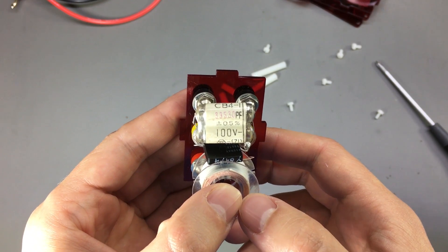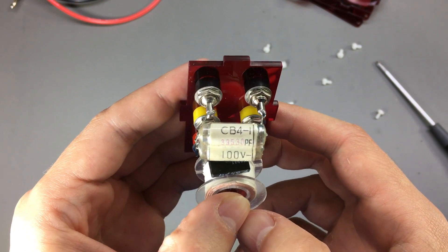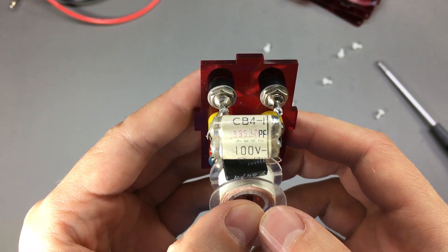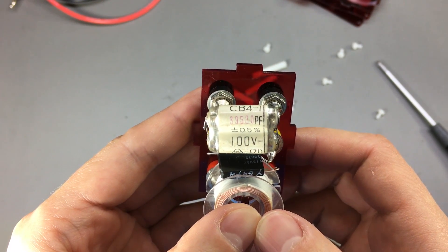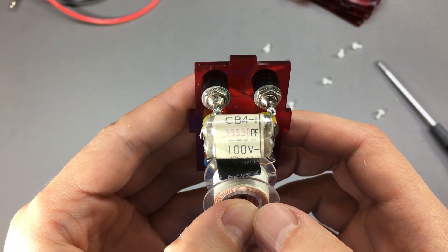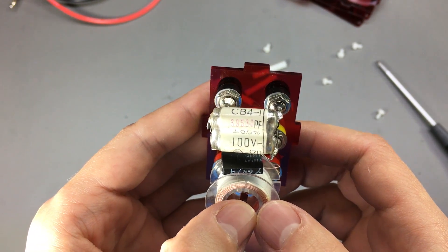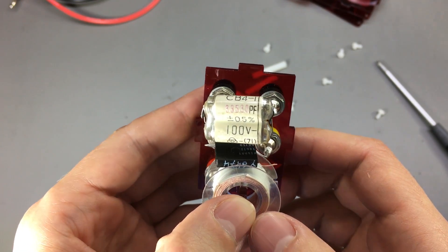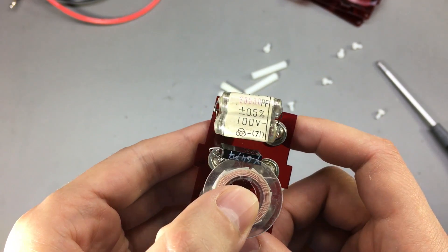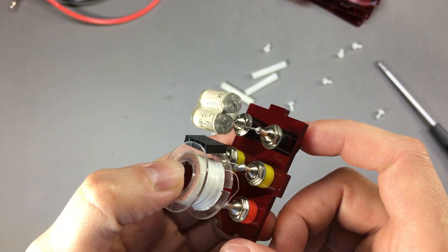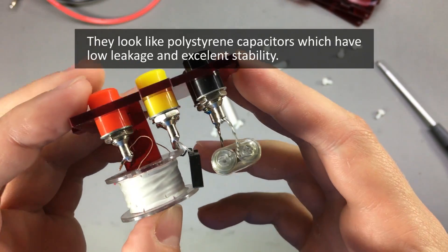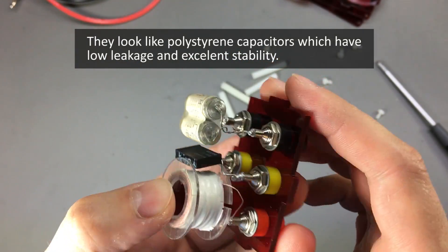So let's take a closer look at these capacitors. It looks like we have two of them in parallel. I don't know why they have two of them in parallel. Does it improve stability or is it just a matter of getting a certain value? I'm sure those of you who know more will let us know in the comments.